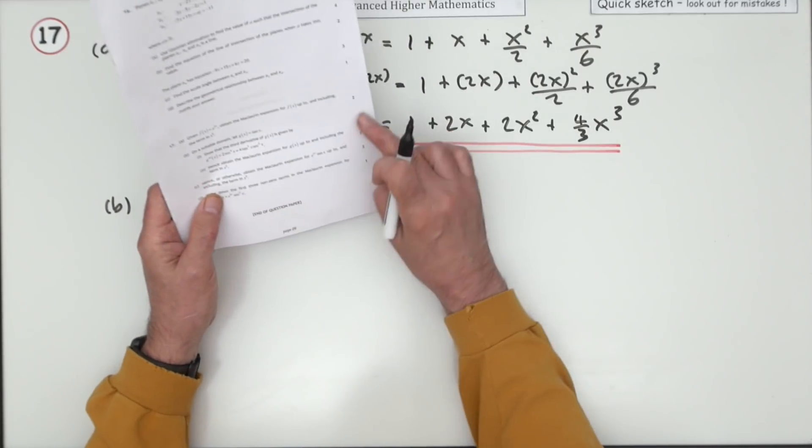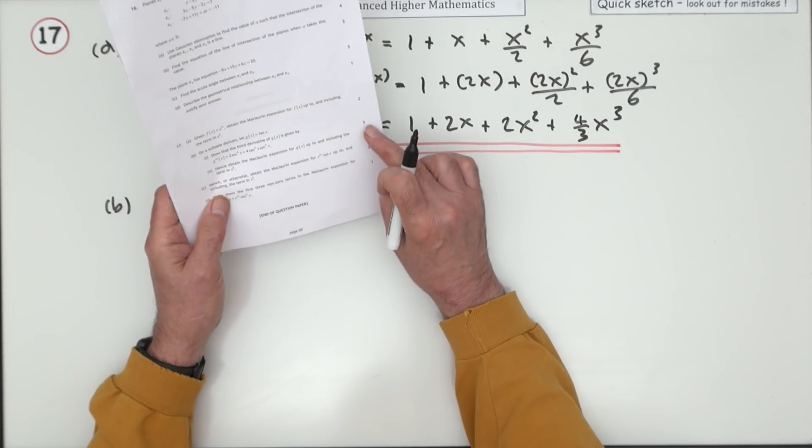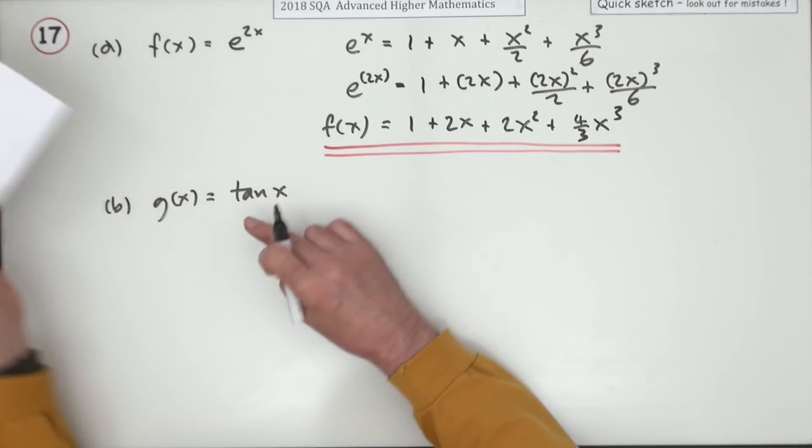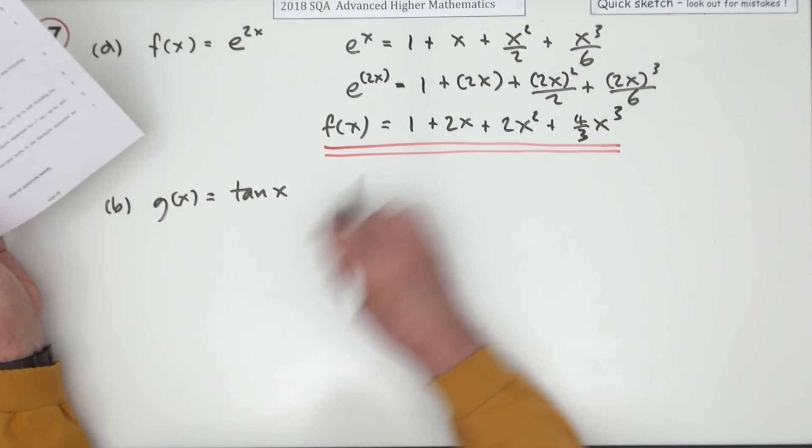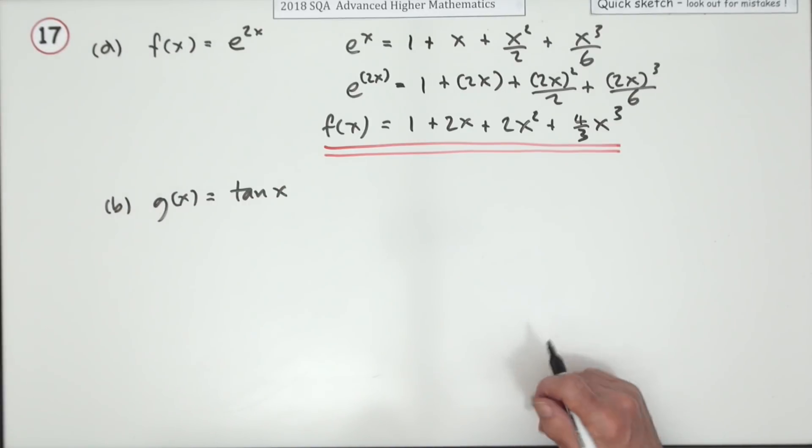Now for part b there's five marks. There's three marks for getting the third derivative of tan x and then two more marks for then putting it into the McLaurin's expansion.